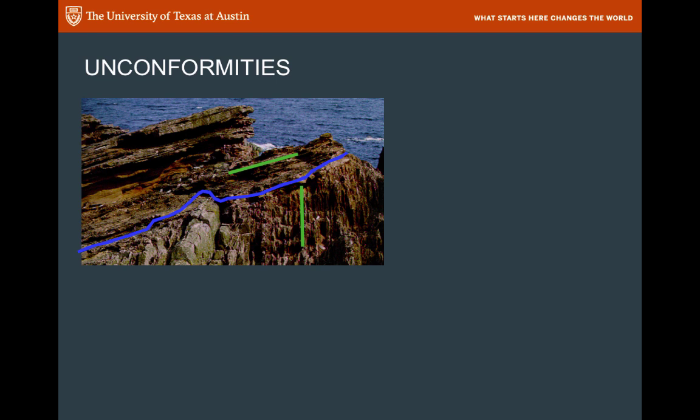This picture is of the original unconformity — the most famous one of all — at Siccar Point. This is where James Hutton first began to contemplate the length of geologic time. In the lower right is a series of rocks tilted almost vertical — dark gray shales — and the green line defines their vertical bedding plane. In the upper left is another series of rocks, red sandstones, dipped just a little bit. The blue line defines the unconformity in between, representing a large gap in time. It is a plane — you can define a strike and dip on it.